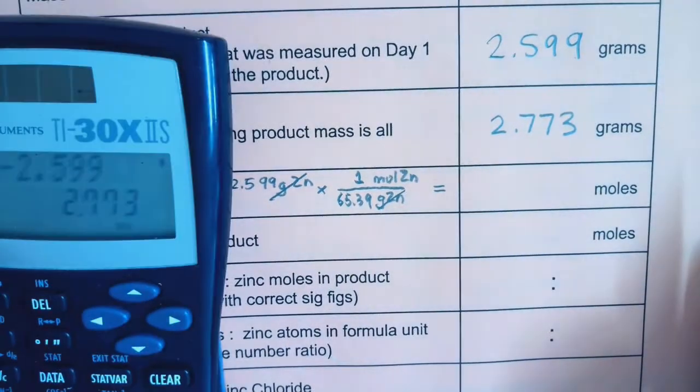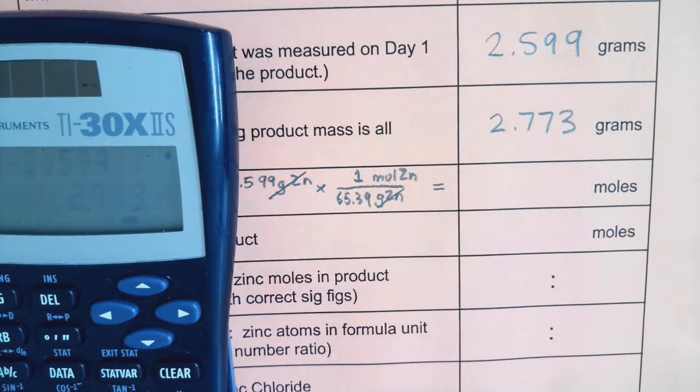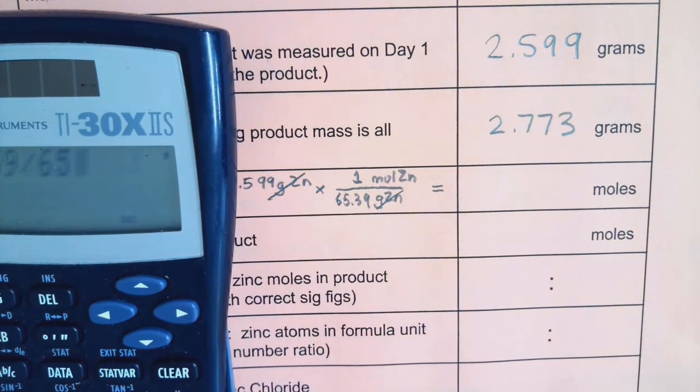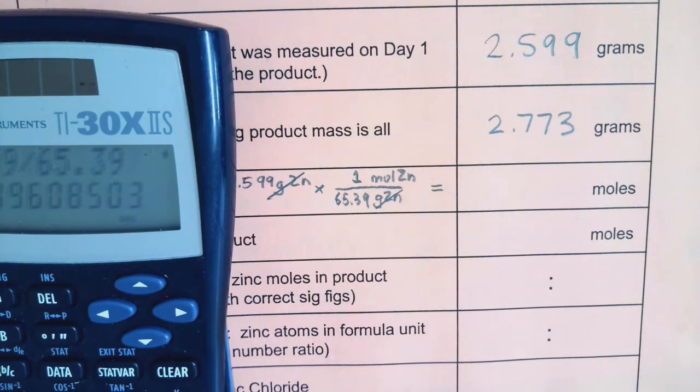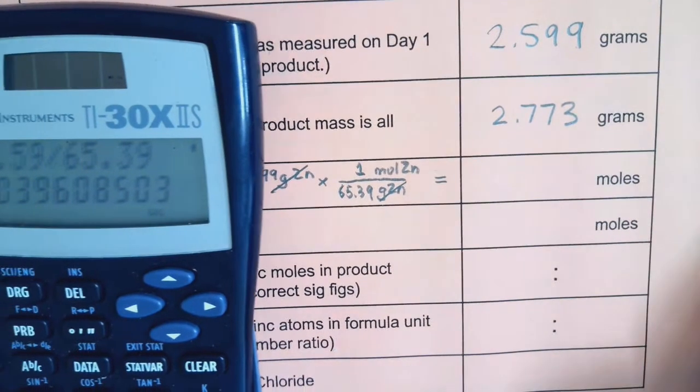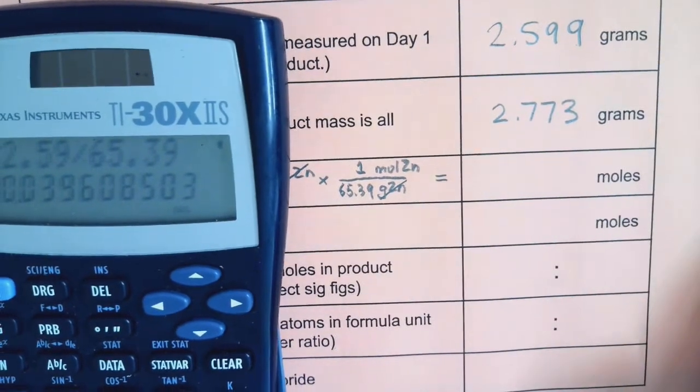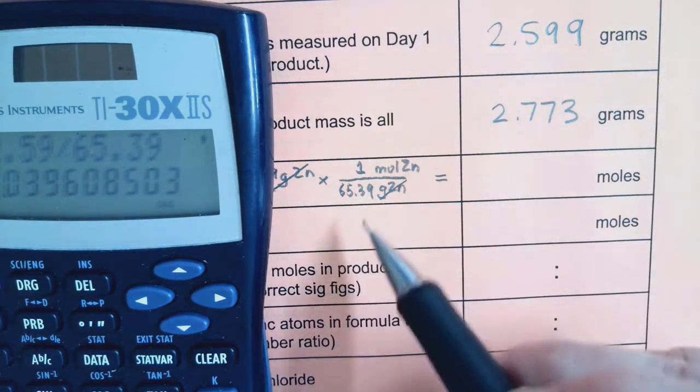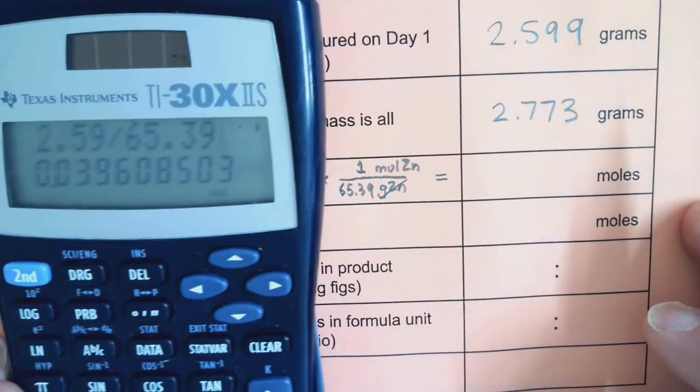Okay. So on my calculator, I am going to take 2.599. I'm going to divide by 65.39 to get my mole amount. I am going to choose to keep four significant digits because my measurements have four significant digits. This particular molar mass has four significant digits.